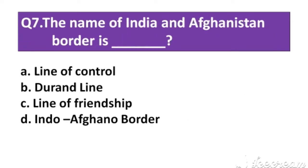Question number 7: The name of the India and Afghanistan border is what? Option A: Line of Control. Option B: Durand Line. Option C: Line of Friendship. Option D: Indo-Afghan Border.